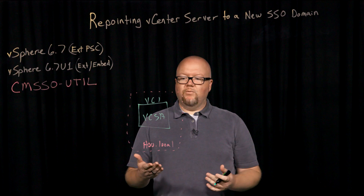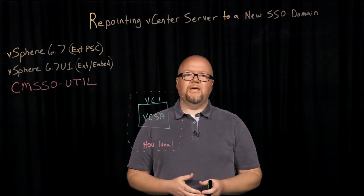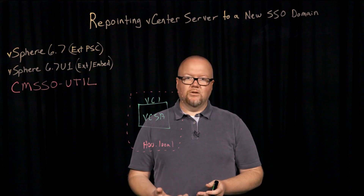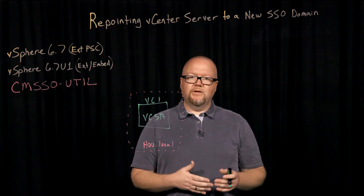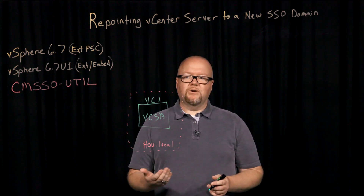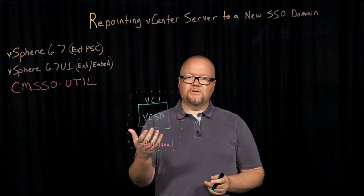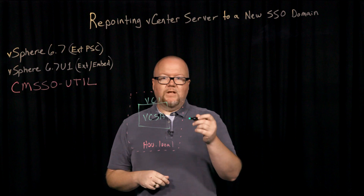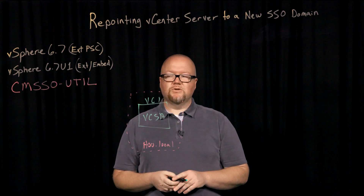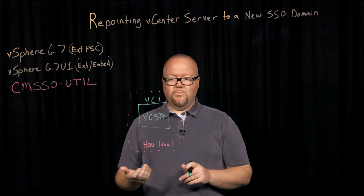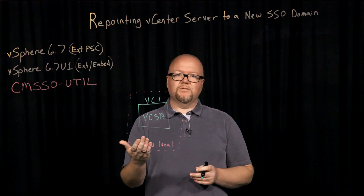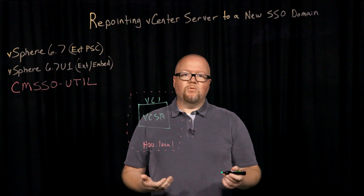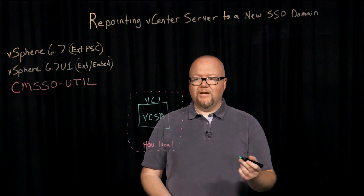Now imagine that we want to change the name of our SSO domain — we don't like HOU.local and we want to change that. With the repointing functionality, we can actually repoint this vCenter server to a domain that does not exist. When we run our cmsso-util, we're doing a domain repoint just like we would if repointing into an existing SSO domain, but now we're repointing into a domain that we're creating today.